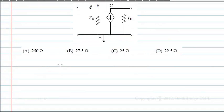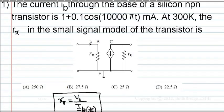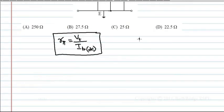We have a relation that is rπ equals VT by IB DC. What is VT at 300 Kelvin? VT is equal to 25 millivolt, the thermal voltage at 300 Kelvin. This is to be remembered.